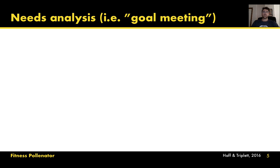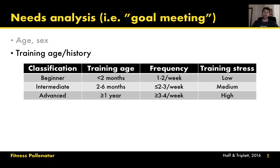The first thing we do when designing a training program is a needs analysis — a fancy word for a goal meeting. We sit down with the trainee and document their age, sex, and training history. If they've been training less than two months, the NSCA Essentials of Strength and Conditioning classifies them as beginners; two to six months is intermediate; over a year is advanced. The recommended training frequency is one to two days a week for beginners, a little more for intermediate and advanced. Most people I've trained were beginners, and the nice thing is that just about everything works for them — there's really no such thing as a perfect training program.